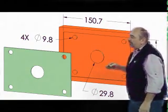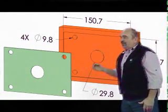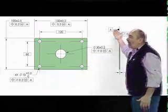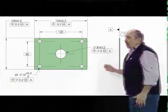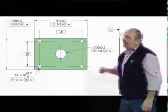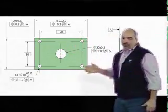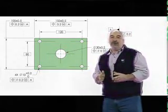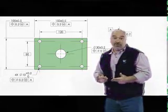However, if we were to take a look at another drawing that does exactly the same control, here we only have one datum being referenced, but all of the features are referenced to that datum. Because of the rule of simultaneous requirements, all of these features are a single pattern, and they must meet their tolerances simultaneously.